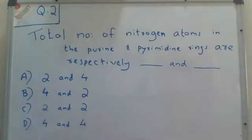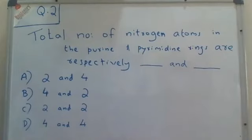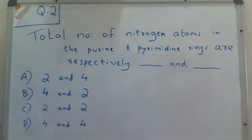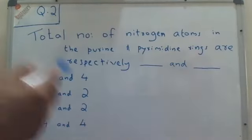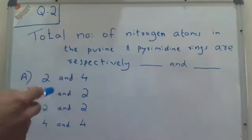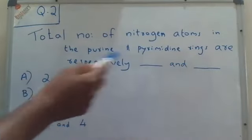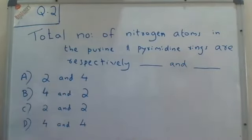Before answering this question, we should know what are purines and pyrimidines. Purines and pyrimidines, as you all know, they are nitrogenous bases present in the nucleic acids. We should know the structure of purine and pyrimidine to answer this question.